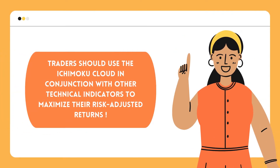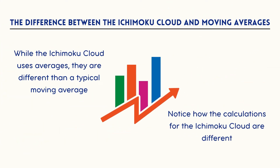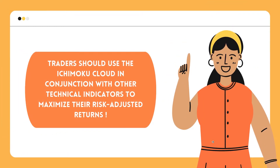Traders should use the Ichimoku Cloud in conjunction with other technical indicators to maximize their risk-adjusted returns. For example, the indicator is often paired with the Relative Strength Index, which can be used to confirm momentum in a certain direction. It is also important to look at the bigger trends to see how smaller trends fit within them. During a very strong downtrend, the price may push into the cloud or slightly above it temporarily before falling again. Crossovers are another way the indicator can be used — watch for the conversion line to move above the baseline, especially when the price is above the cloud, as this can be a powerful buy signal.